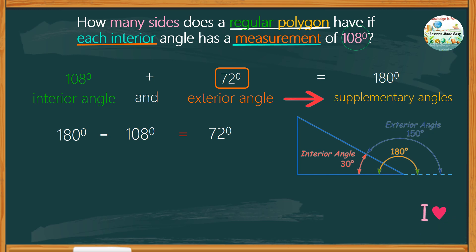Now that we have the size of each exterior angle, we can find the number of sides. Since the sum of the exterior angles is 360 degrees, we can find the number of sides by dividing 360 by the size of each exterior angle, which is 72. Here we get a quotient of 5.